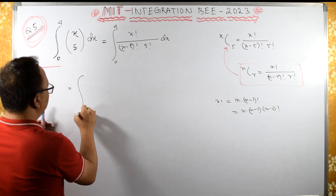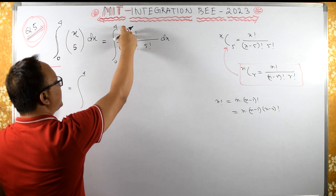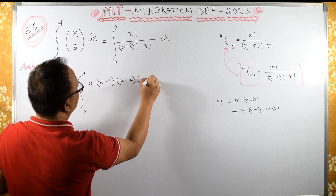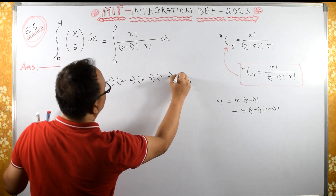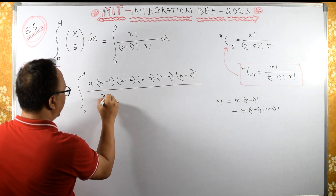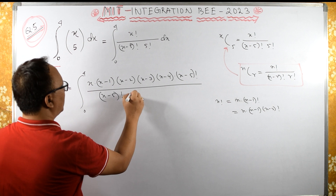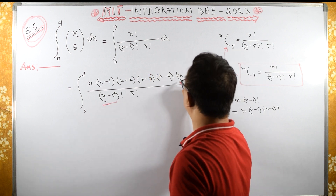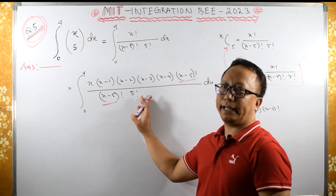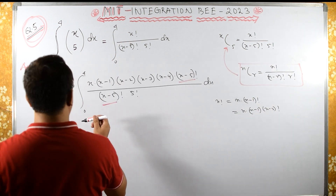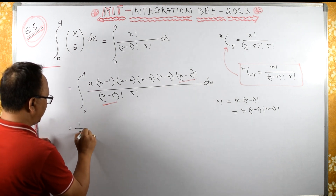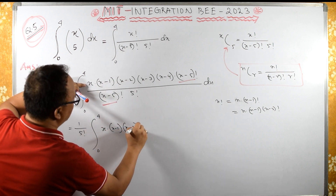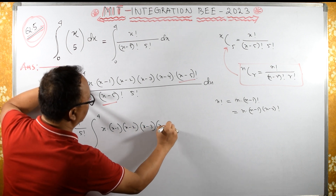Therefore, this is the same as the integral from 0 to 4. I can reduce X factorial down to X times (X-1) times (X-2) times (X-3) times (X-4), then (X minus 5) factorial upon (X minus 5) factorial — these cancel. Since 5 factorial is constant, I can take it outside: 1 over 5 factorial, integral from 0 to 4 of X times (X-1) times (X-2) times (X-3) times (X-4) dx.